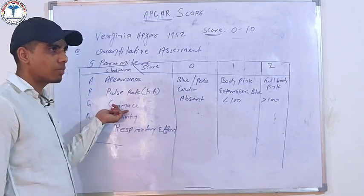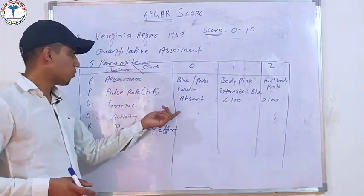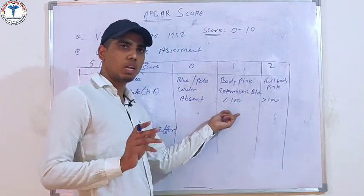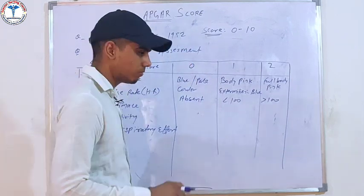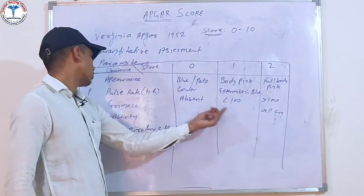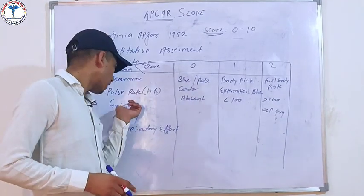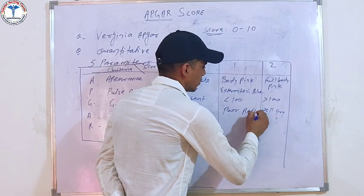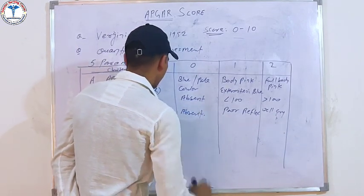For Grimace, we check the reflexes. If there is a good reflex response, we give 2 marks. If there is a poor reflex, the score is 1. If the reflex is absent, then the score is 0.